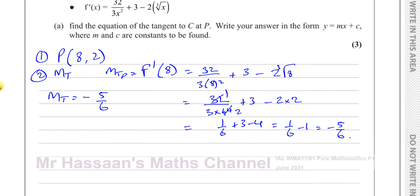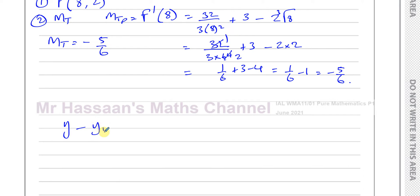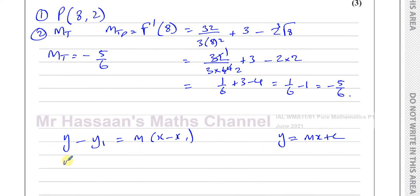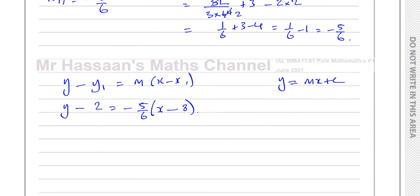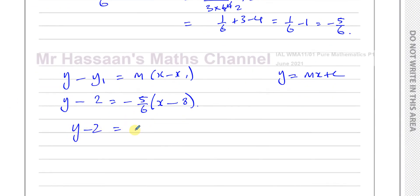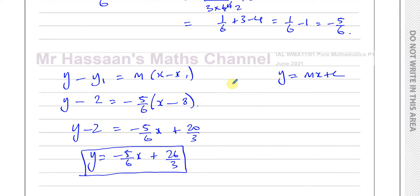We now have enough information to find the equation of the tangent. Using y − y₁ = m(x − x₁): y − 2 = −5/6 × (x − 8). Expanding: y − 2 = −5/6 x + 40/6, which is −5/6 x + 20/3. Adding 2 to both sides: y = −5/6 x + 20/3 + 6/3, giving y = −5/6 x + 26/3.